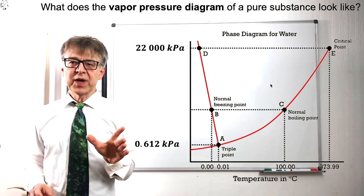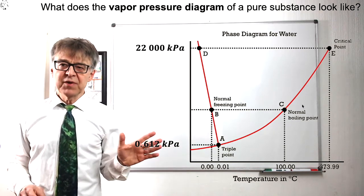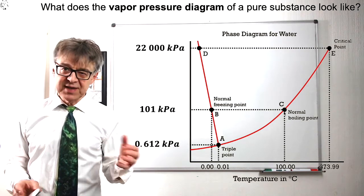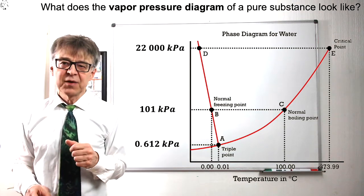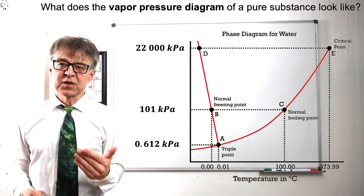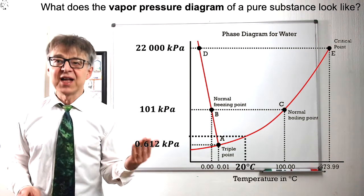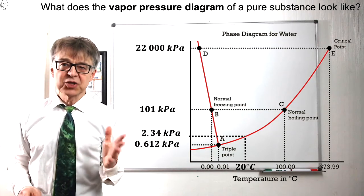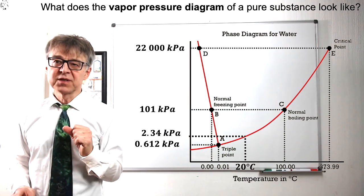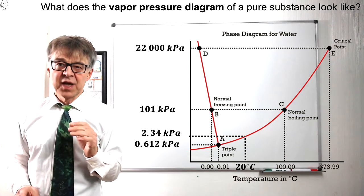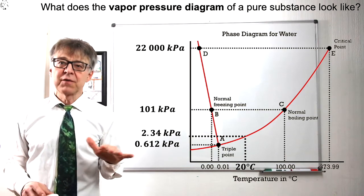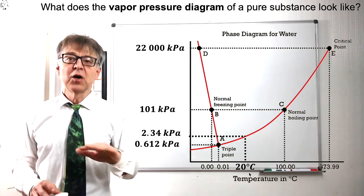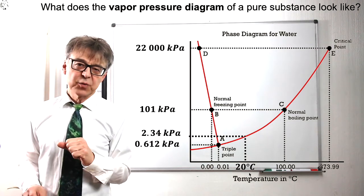From this diagram, we can depict the boiling point of the liquid for any pressure. The standard boiling point of water at 101 kPa is 100°C. At 20°C, the vapor pressure of water is 2.3 kPa. If we had an external pressure of 2.3 kPa, water would boil at 20°C.